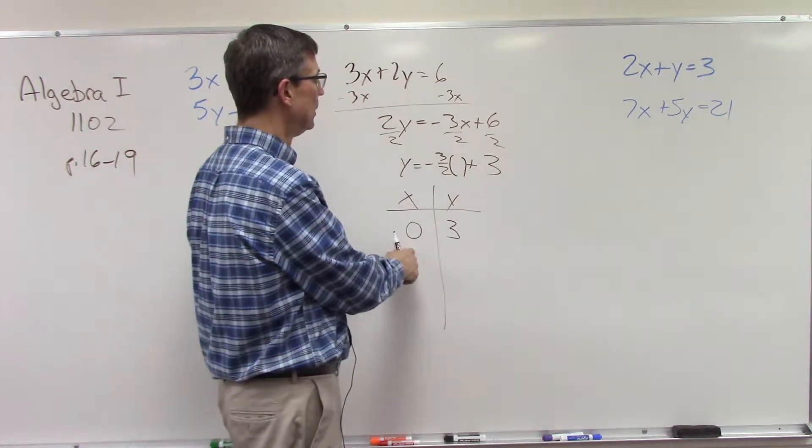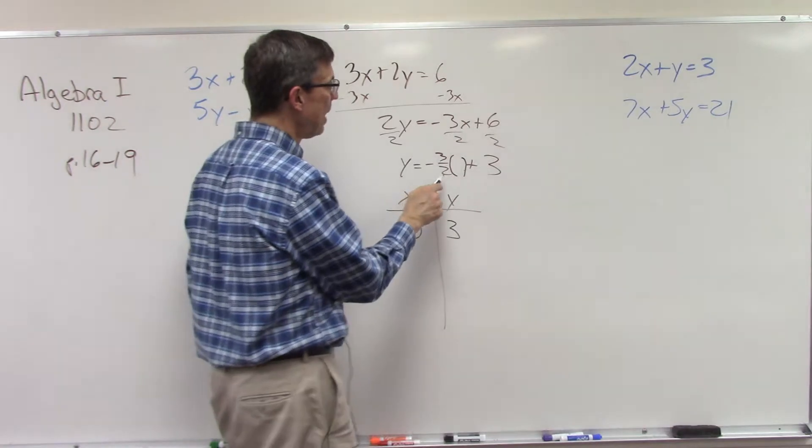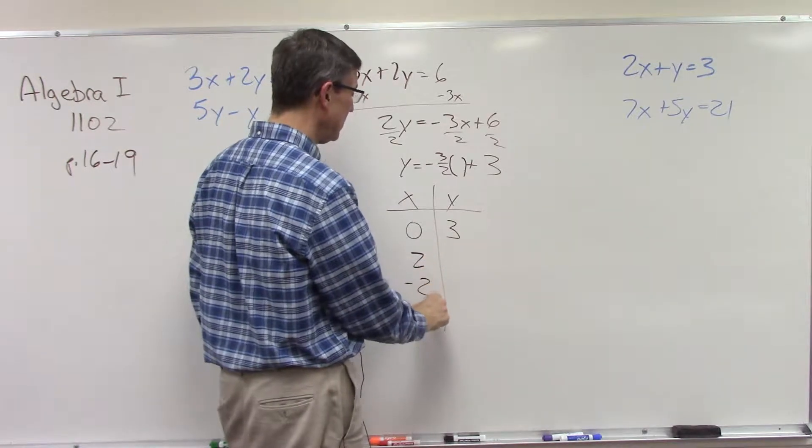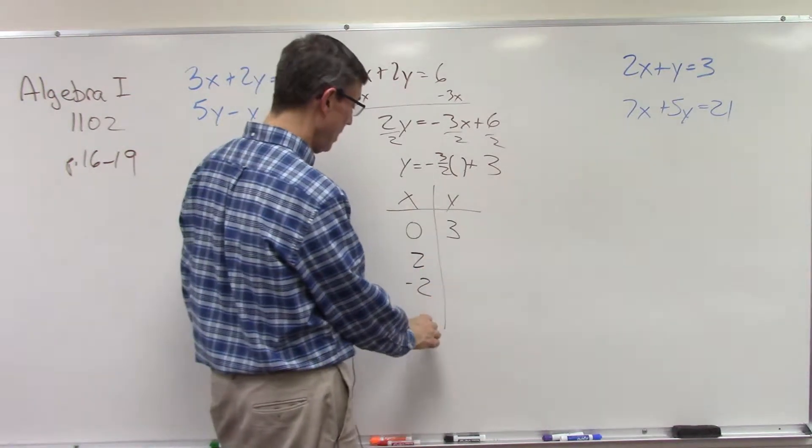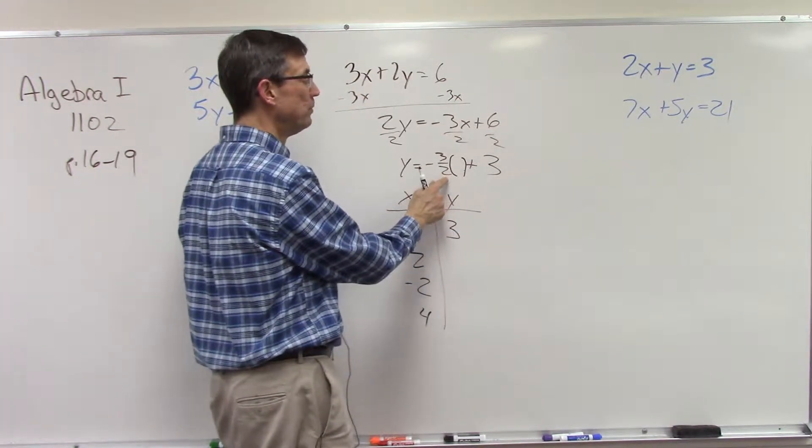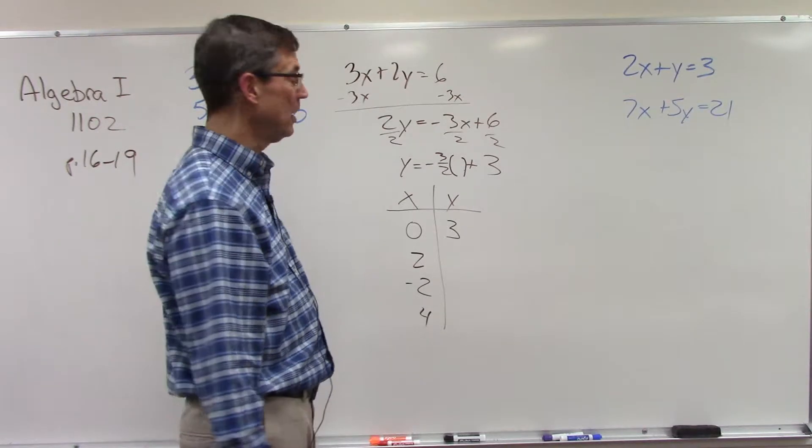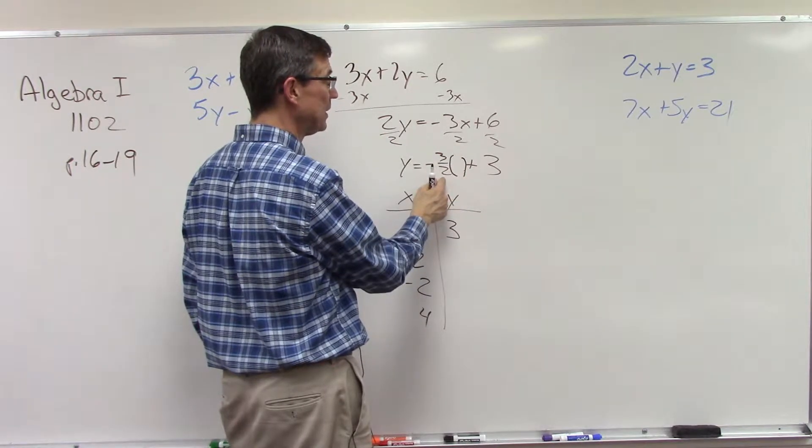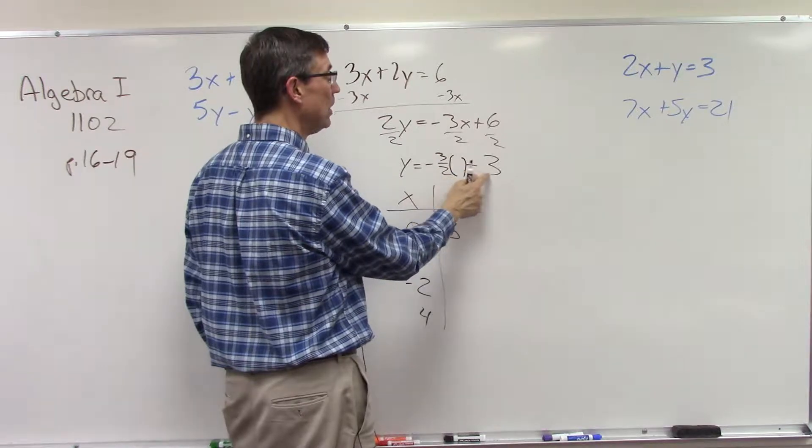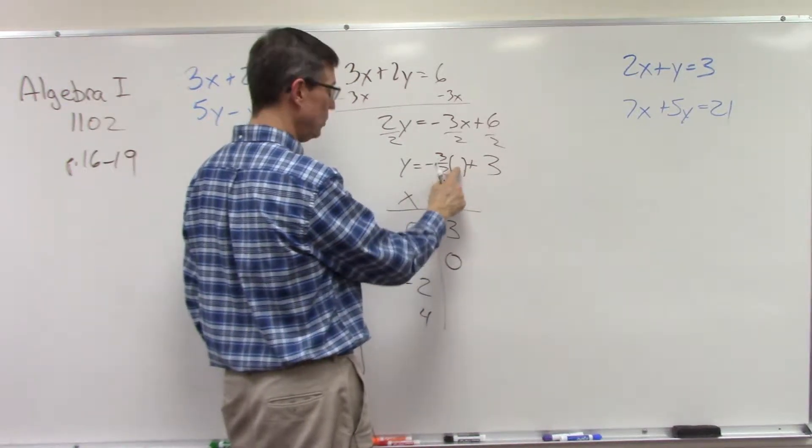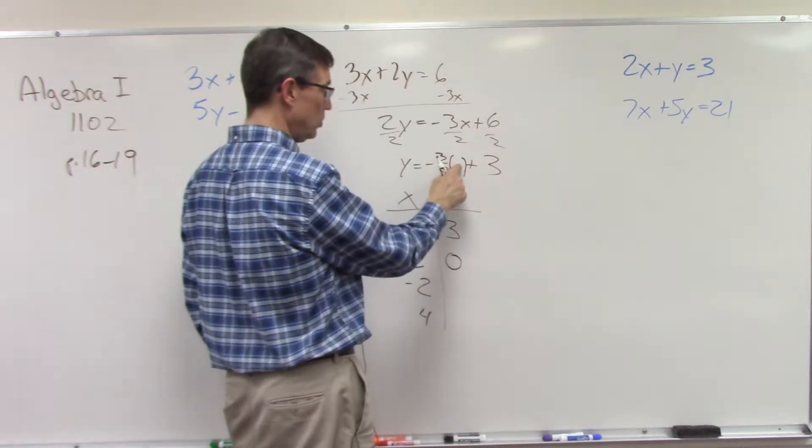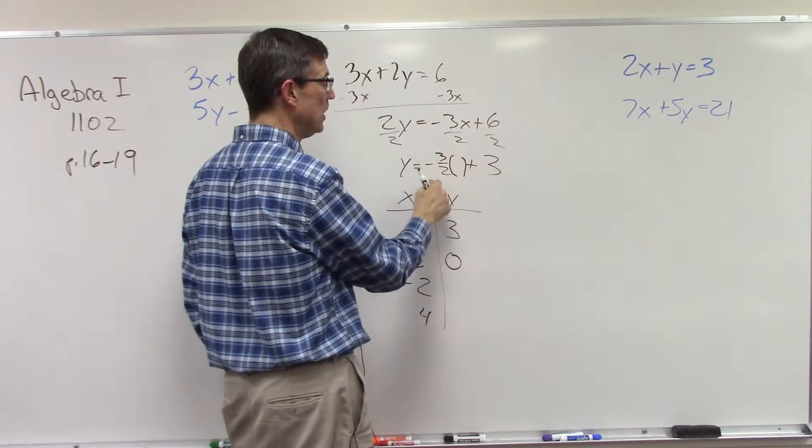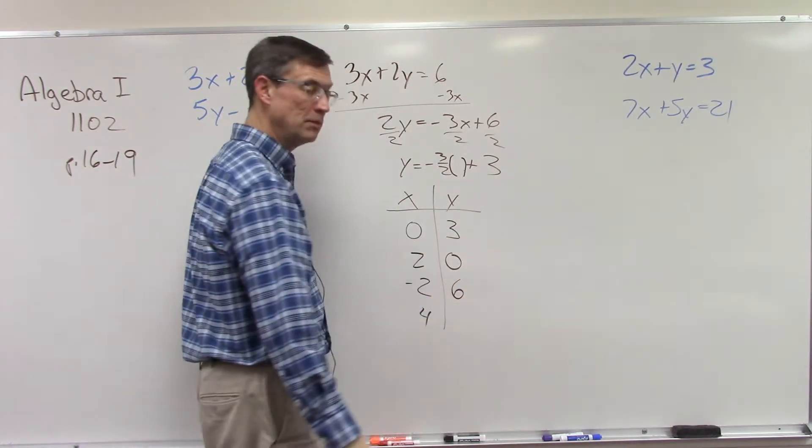Here's tip number one: always use zero. When you plug in zero, this whole thing disappears and all you get is this number. We actually call this the y-intercept, where it crosses the y-axis where x equals zero. Here's the other tip: look at the denominator. If there's a fraction here, since the denominator is over 2, then I want to plug in 2 and negative 2. If I want to plug in another number, I'm going to plug in 4 because it is a multiple of that denominator.